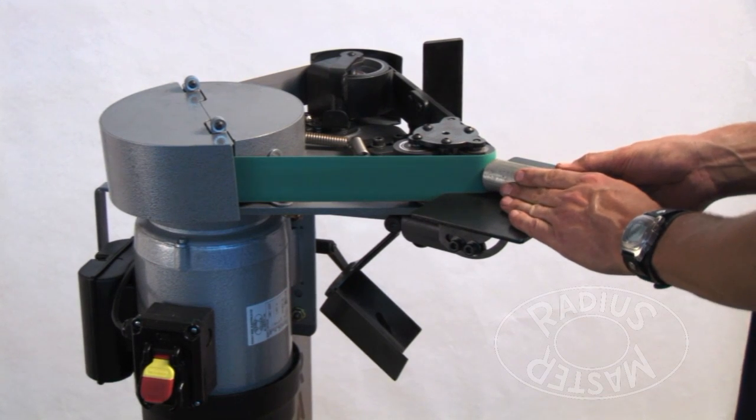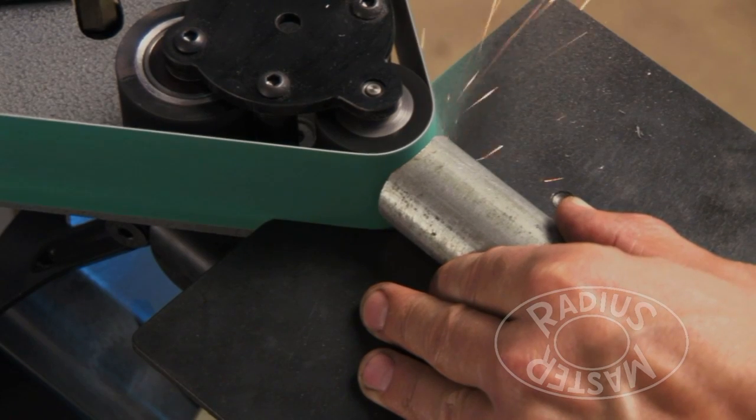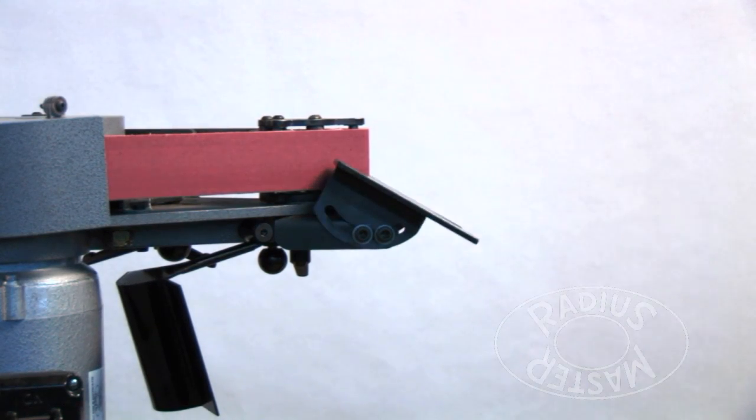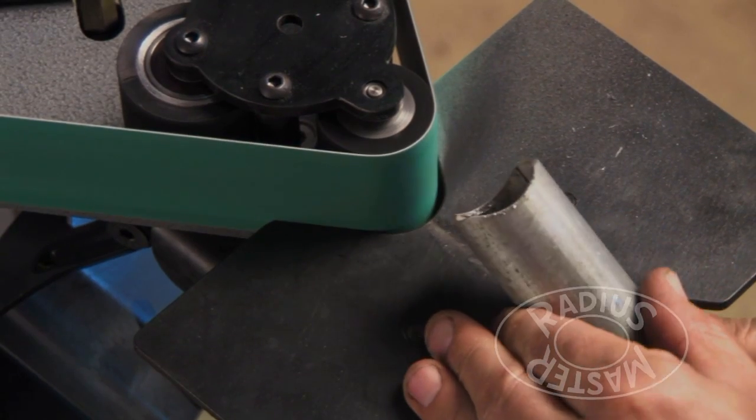Tube notching becomes so convenient with the table provided, with three diameters and any angle from square to 45 degrees all set up in seconds.